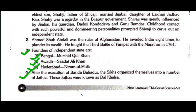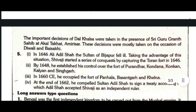Question four: What was Dal Khalsa? How did Dal Khalsa take important decisions? After the execution of Banda, the Sikhs organized themselves into a number of jats. These jats were known as Dal Khalsa. The important decisions of Dal Khalsa were taken in the presence of Sri Guru Granth Sahib at Akal Takhat, Amritsar. These decisions were mostly taken on the occasion of Diwali and Vaisakhi.